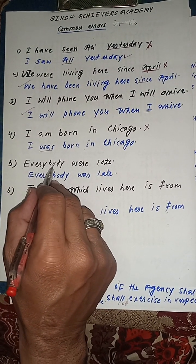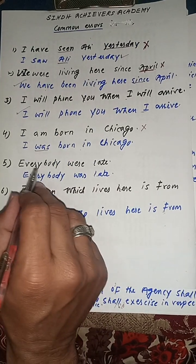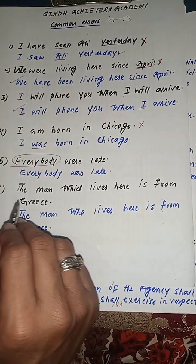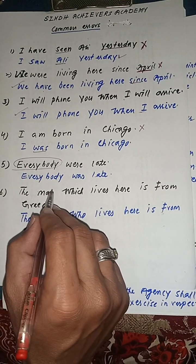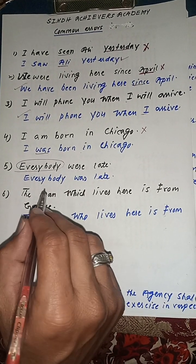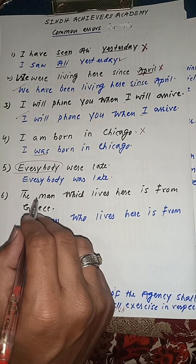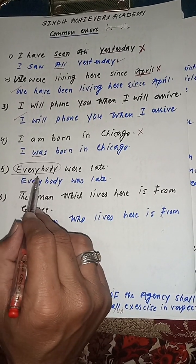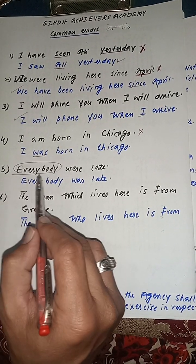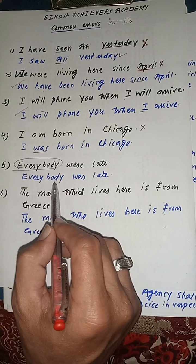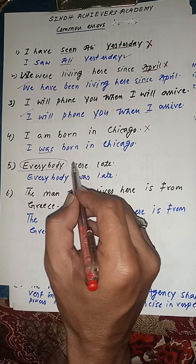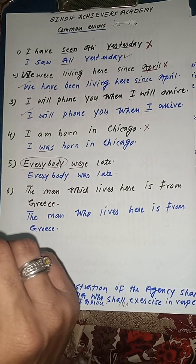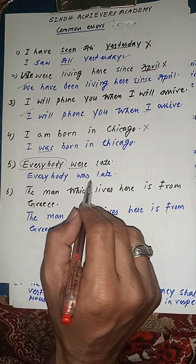Consider: 'Everybody were late.' Words like 'every' and 'each' take a singular verb. Using a plural verb here is grammatically incorrect. The correct sentence is: 'Everybody was late.'